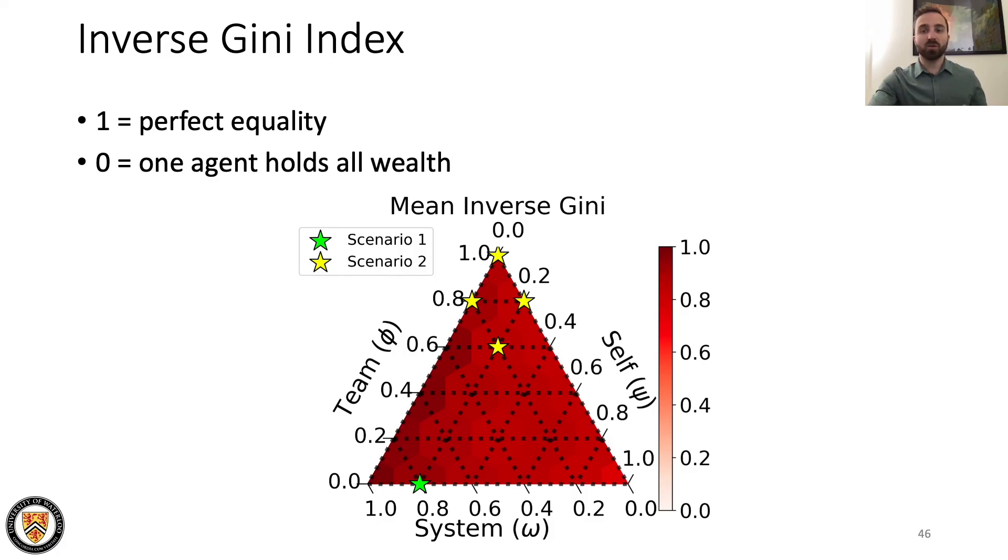While mean population reward provides an indication as to the global productivity, measures of equality give context to the dispersion of the reward across a population. We examine the inverse gini index for each credo combination where a value of one means perfect equality and zero means one agent holds all of the wealth. We find that every combination of credo has higher equality than the fully self-focused base case and both scenarios which achieve high mean population reward also achieve high equality.